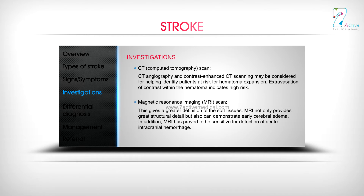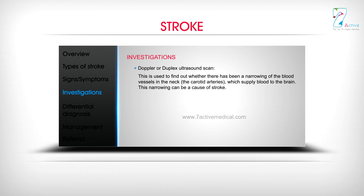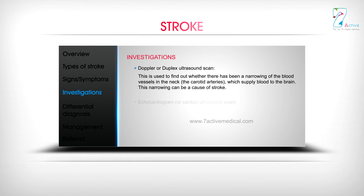MRI (magnetic resonance imaging) scan provides greater definition of soft tissues, offering great structural detail and can demonstrate early cerebral edema. MRI has also proved sensitive for detection of acute intracranial hemorrhage. Doppler or duplex ultrasound scan is used to find out whether there has been narrowing of the blood vessels in the neck — the carotid arteries — which supply blood to the brain, as this narrowing can be a cause of stroke.